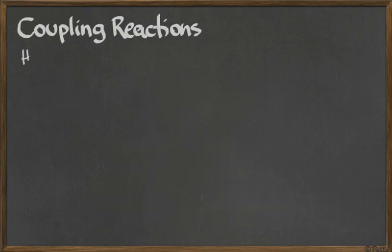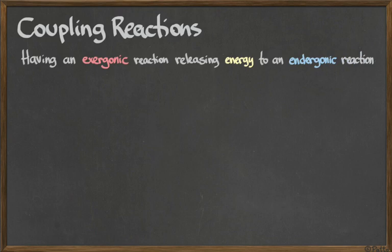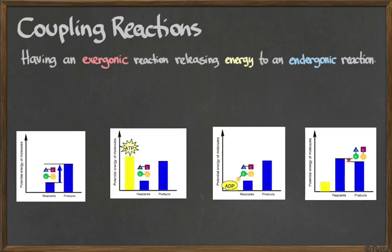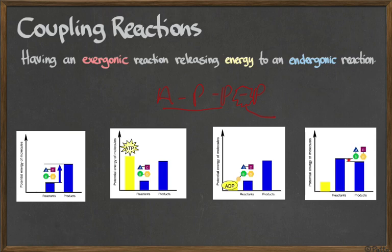Putting things together: coupling reactions is when you have an exergonic reaction releasing energy to make an endergonic reaction happen. In our example, to make the blue endergonic reaction happen, we have the yellow exergonic reaction - ATP becoming ADP - and you have coupling involving ATP, a molecule that can hold the energy of its bonds. Three phosphates - adenosine with phosphate, phosphate, phosphate - the energy is in there. To build this, gluing a phosphate into ADP requires energy. But when you break it down and separate the phosphate, it releases energy. So basically you are using energy from bonding.